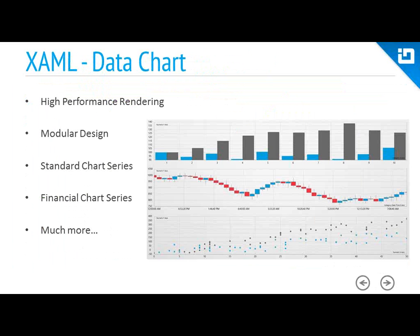The first control we're going to cover is our data chart. The XAM data chart control can display tens of thousands of data points and update itself every few milliseconds to handle real-time data feeds. It has a modular design — the control is designed with modularity of legend, axis, and series taken into account. You can have multiple axes, legends, and chart series in the same chart plot area. We support area, line, spline, column chart series, financial chart series including candlestick and OHLC bar charts, and technical indicators like moving averages, MACDs, Wilder's RSI, and many more.